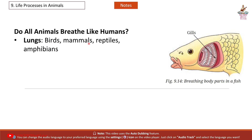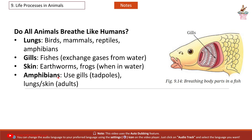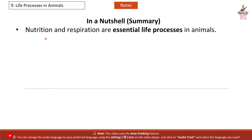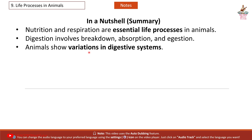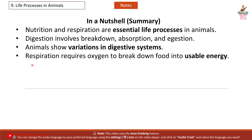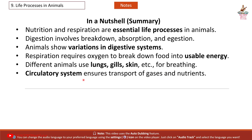Different animals breathe differently: birds, mammals, reptiles, and amphibians use lungs; fish use gills to exchange gases from water; earthworms and frogs breathe through their skin when in water. Amphibians use gills as tadpoles and lungs and skin as adults. Summary: nutrition and respiration are essential life processes in animals. Digestion involves breakdown, absorption, and ejection. Animals show variations in digestive systems. Respiration requires oxygen to break down food into usable energy. Different animals use lungs, gills, skin, etc. for breathing. The circulatory system ensures transport of gases and nutrients.